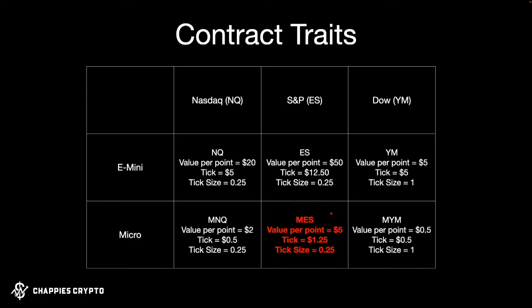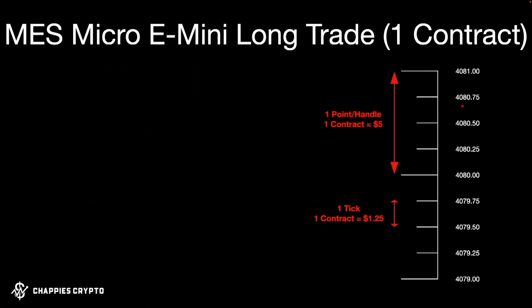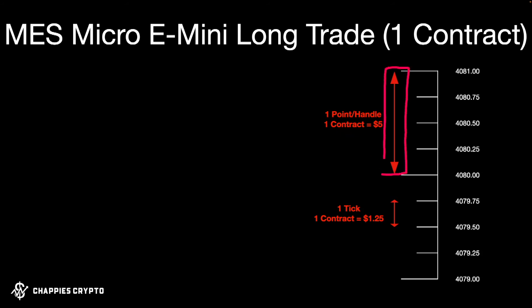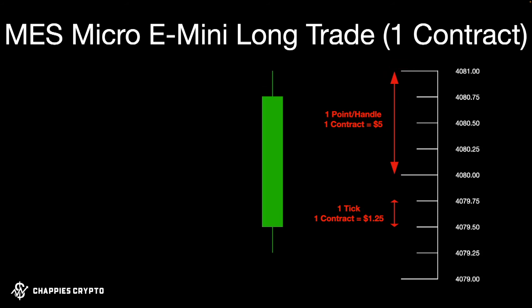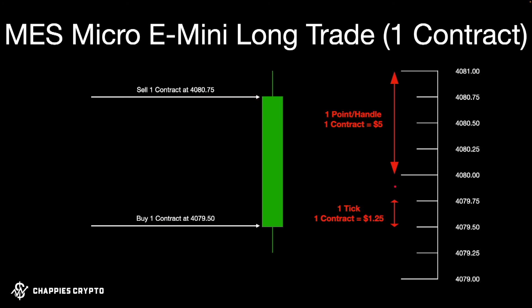Here's an example of trading the MES — the micro e-mini S&P contract. The value per point on this is five dollars and the tick size is one dollar twenty-five. The example price range centers around 4080. Each 0.25 increment — or each tick — is worth one dollar twenty-five if you're trading one contract. Moving up a full point — sometimes called a handle — is four ticks, and for one contract that whole movement is equivalent to five dollars in value.